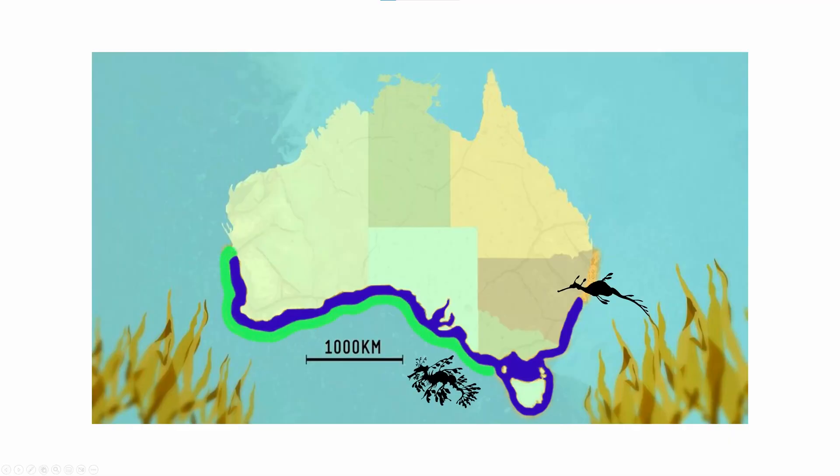The leafy sea dragon is found in a smaller part of this same area, and the ruby sea dragon is still only known from Western Australia. The important thing is that we care about sea dragons — this is why I'm doing this kind of work, and what we're interested in is how to understand those sea dragons better.